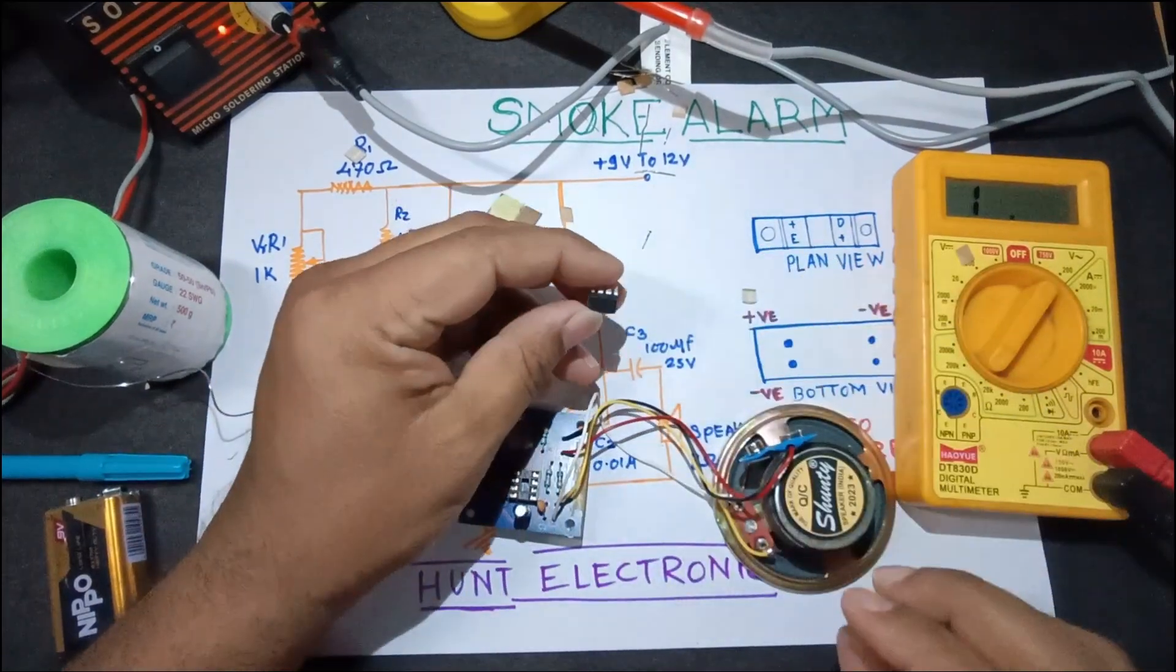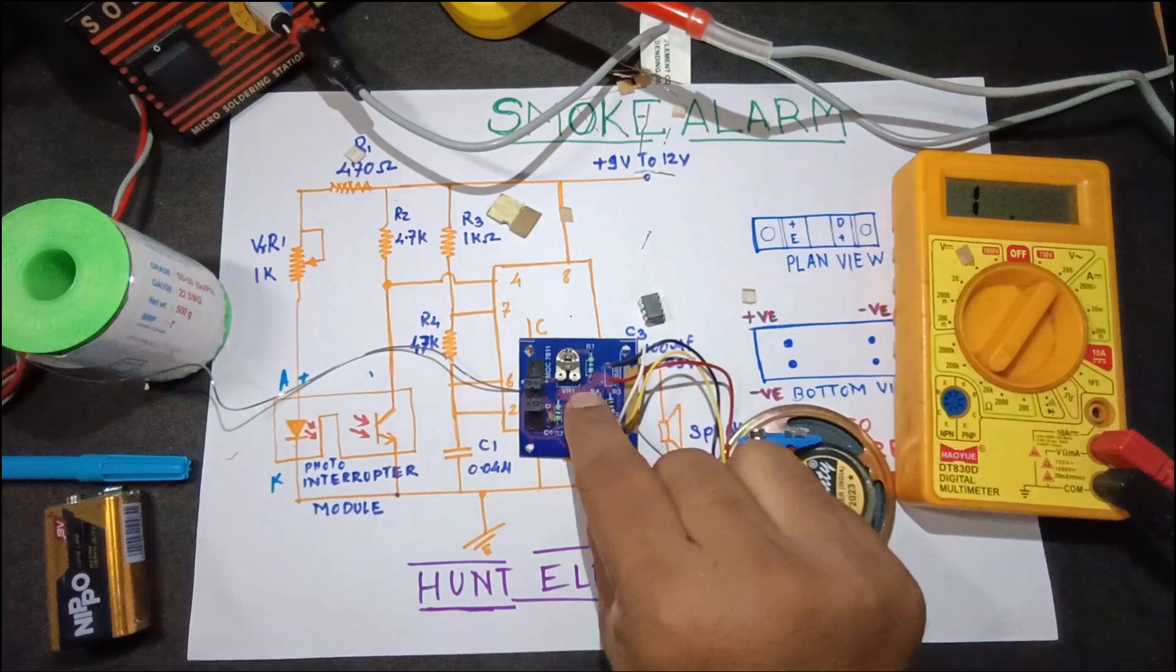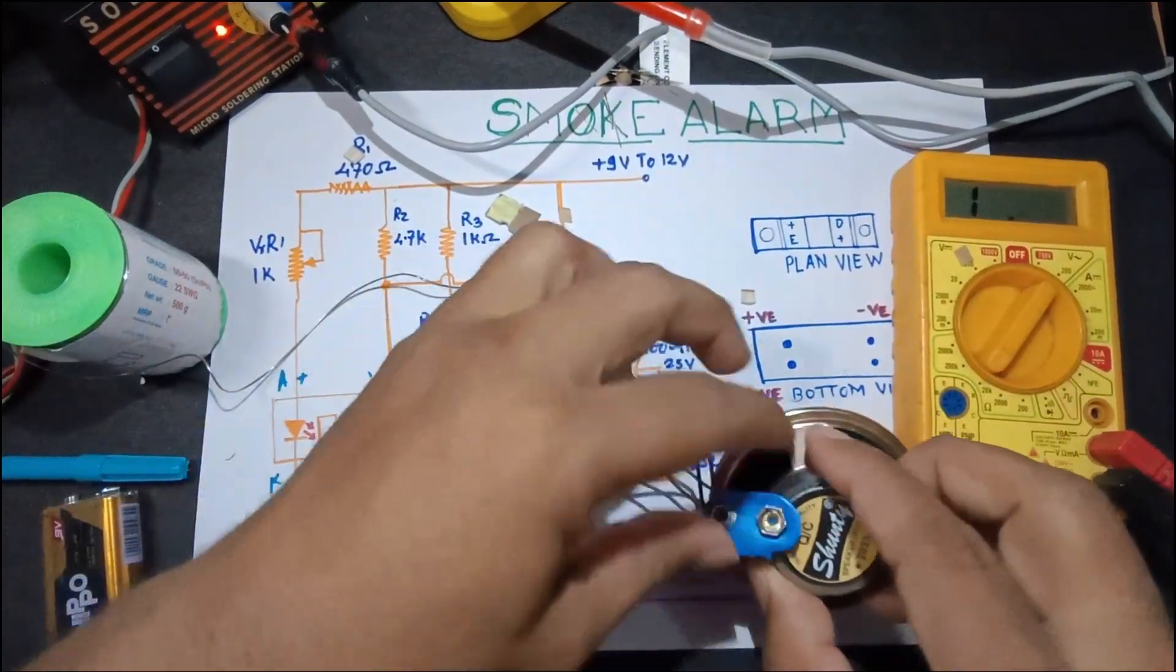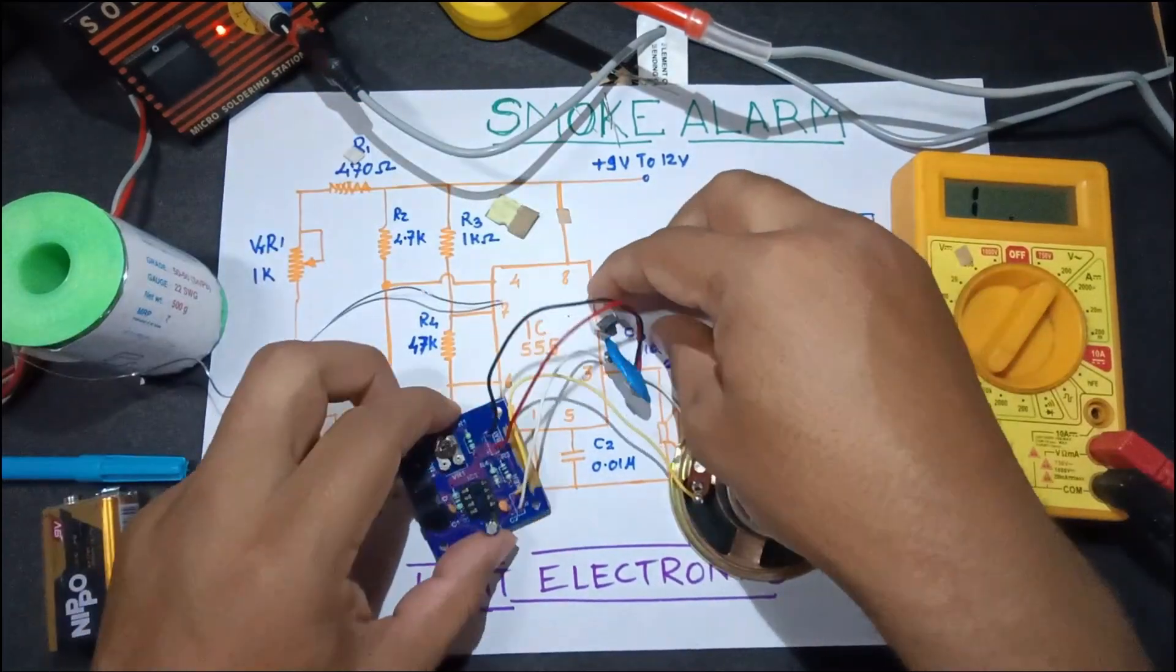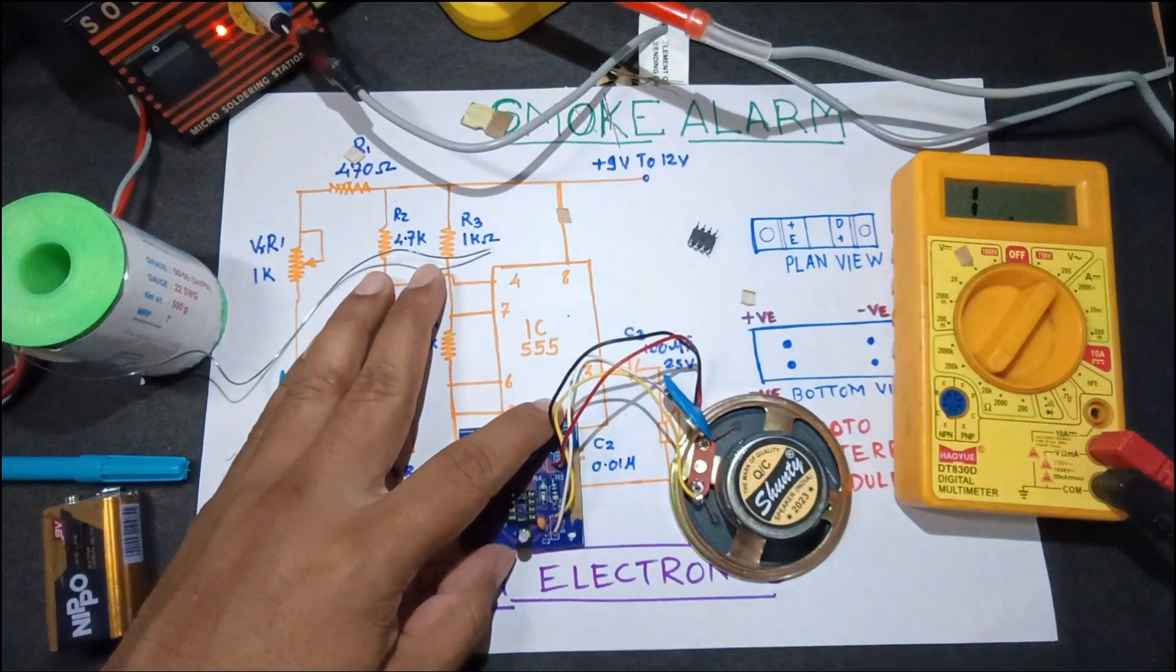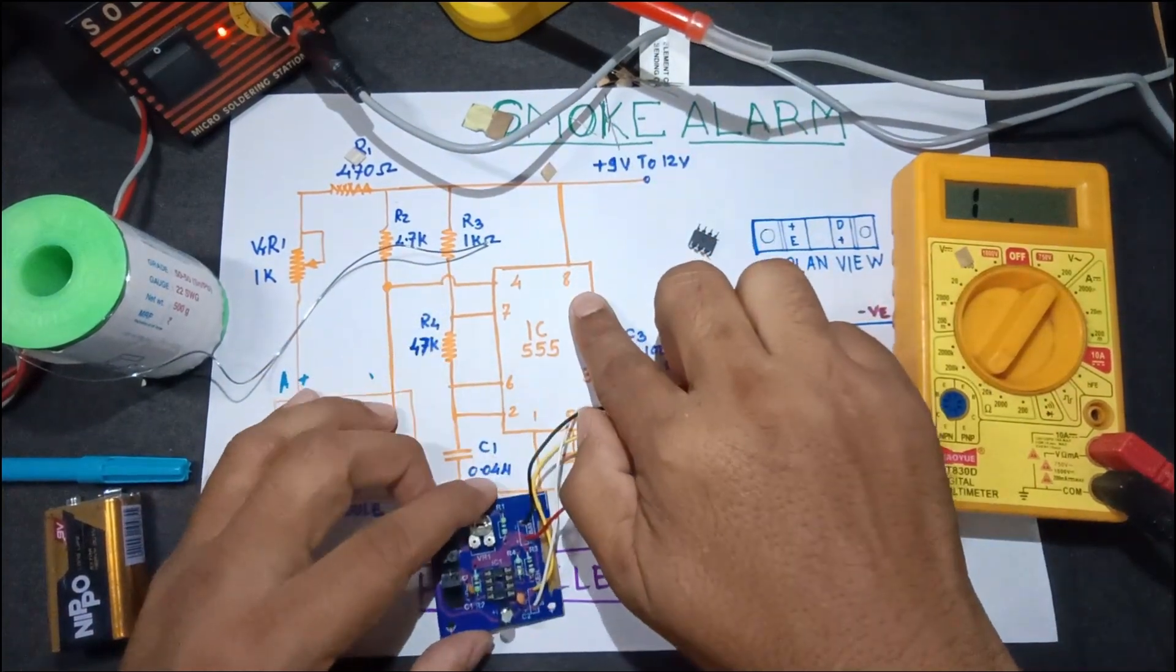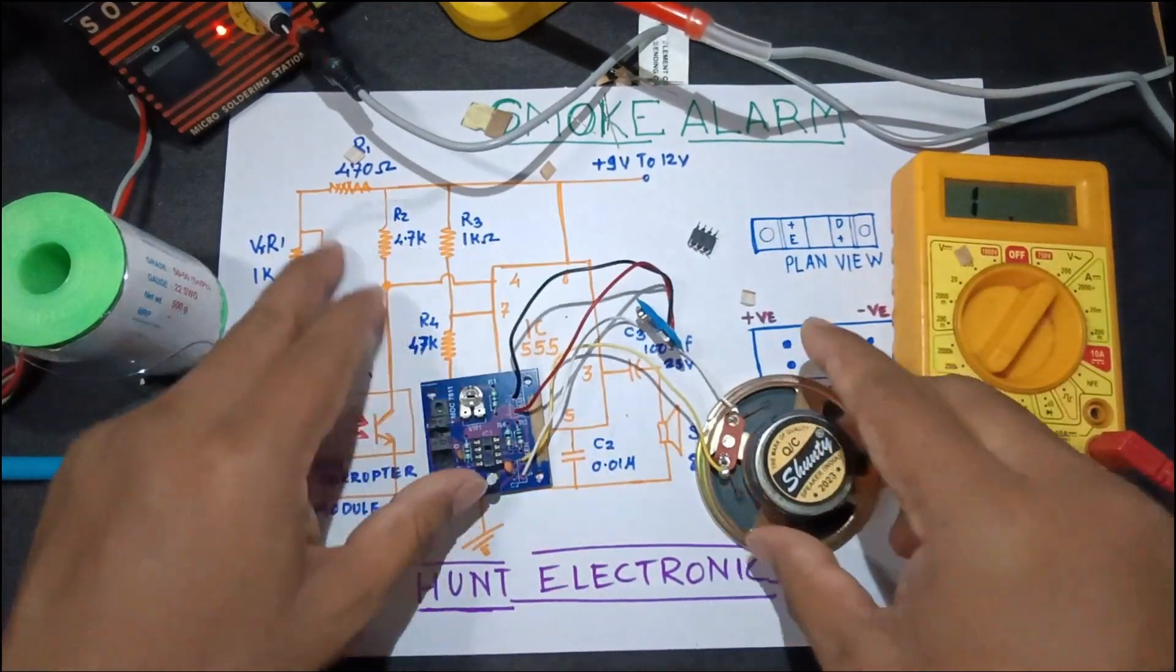So before connecting the IC or before putting the IC into the base, let us give 9 volt power to the circuitry and check whether all the pins of the IC are getting properly powered, like pin number 8 as plus VCC, pin number 1 as ground, and so on.